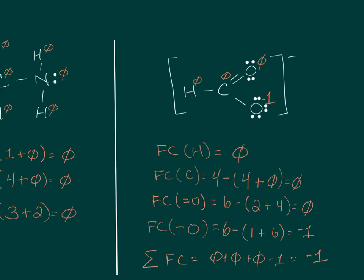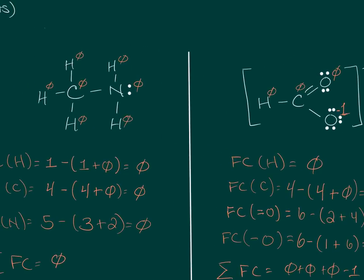To summarize: the sum of formal charges must equal the total charge on the molecule. When calculating formal charges, you don't care what lies at the end of the bonds — only the number of bonds and lone pairs on the atom itself matter. Once you determine that hydrogen with one bond has a formal charge of zero, that holds from molecule to molecule. Likewise, carbon with four bonds always has a formal charge of zero. Now go try this yourself.